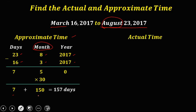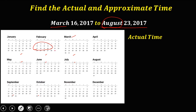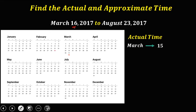To solve for the actual time, we use the number of days in a calendar. For March, there are 31 days, but since it started on March 16, we still have 15 days remaining — 31 minus 16 equals 15.